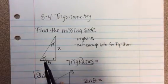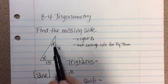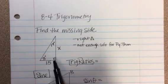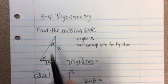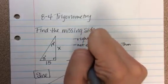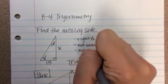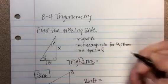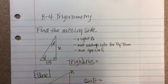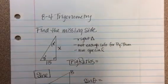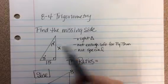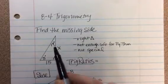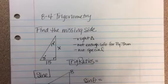If we were to do special rights, we'd look for a 45-45-90 or a 30-60-90, but the angles are 71 and 19, so this is not a special right triangle. So now we're left with how we would solve for something like that when you don't have enough information to use your other tools.